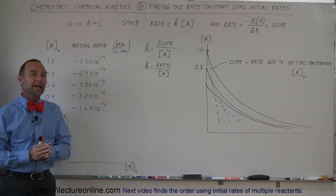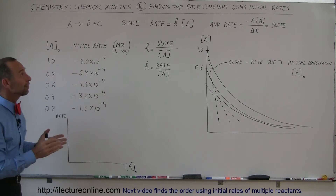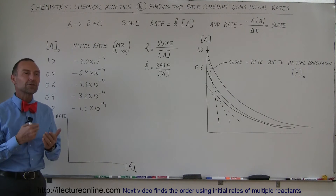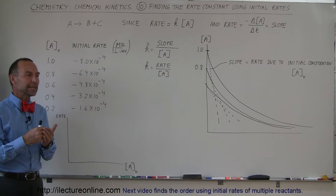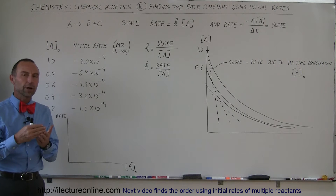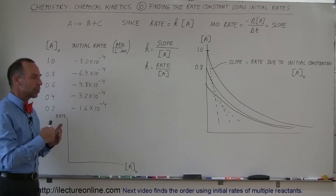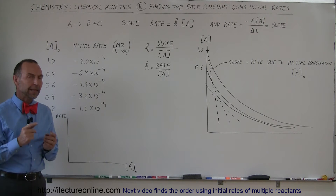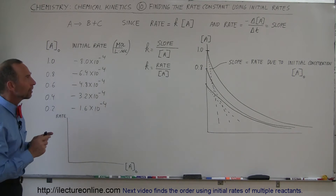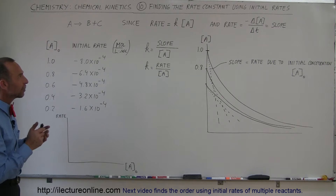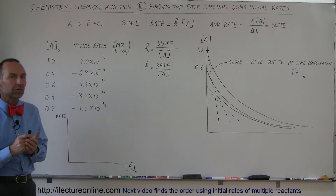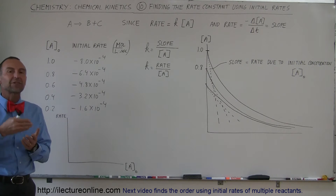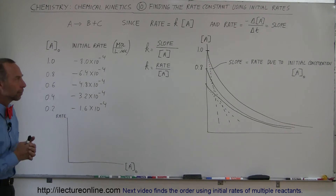Welcome to ElectronLine. In the previous video we found how we discovered the order of the reaction. Now we're going to take a look and see how we find the rate constant — the constant that determines how fast the reaction will take place.